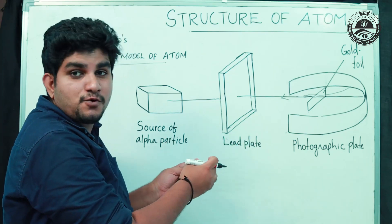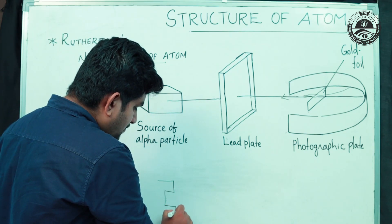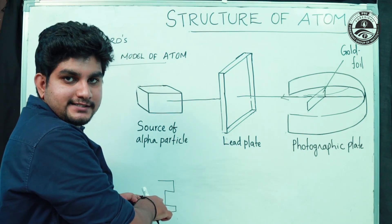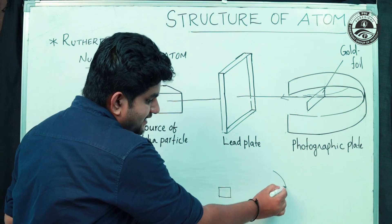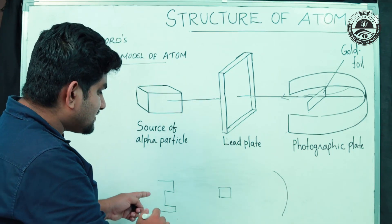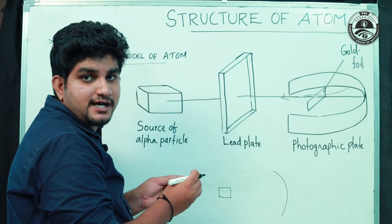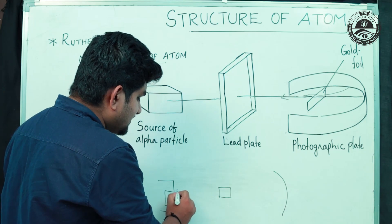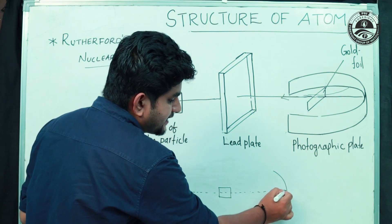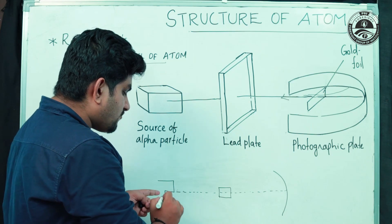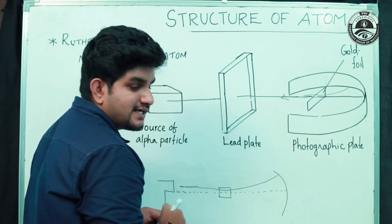Looking at the diagram to simplify things: there is a source of alpha particles, a gold foil, and a screen. Most of the alpha particles pass through the foil without any deviation and hit the screen. Some alpha particles hit the gold foil at a small angle and are deflected — that is a small-angle deviation.